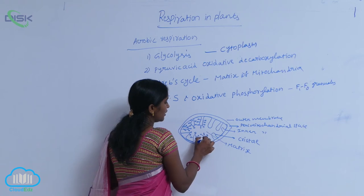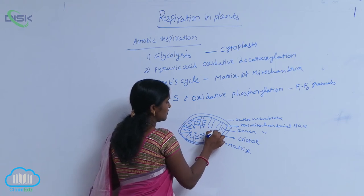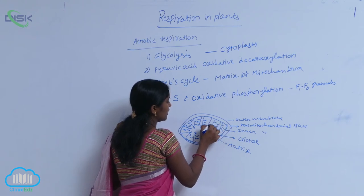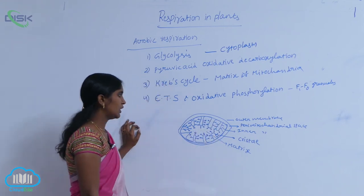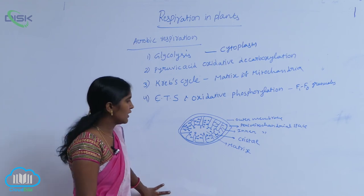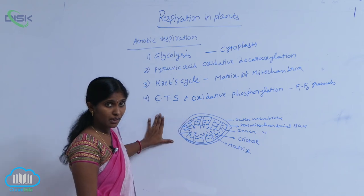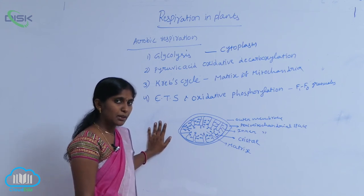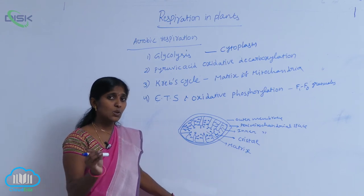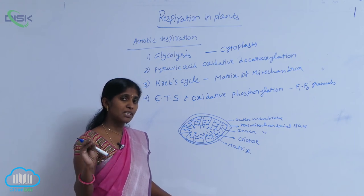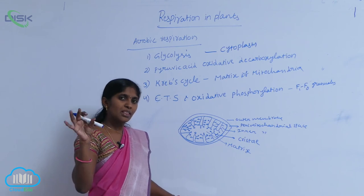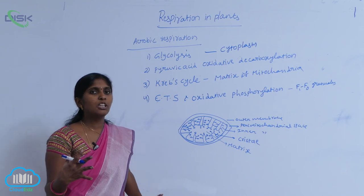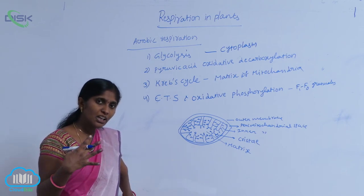Mitochondria are present within the cell, especially in the cytoplasm. Glycolysis is carried out in the cytoplasm, where pyruvic acid is formed. The pyruvic acids are converted into acetyl-CoA, which enters the mitochondria matrix where the Krebs cycle is carried out. In the Krebs cycle, acetyl-CoA is oxidized into carbon dioxide and hydrogen molecules. The released hydrogen molecules with electrons then enter the electron transport system, resulting in oxidative phosphorylation, which yields ATP.